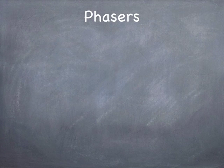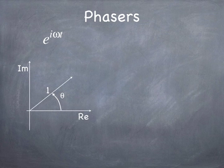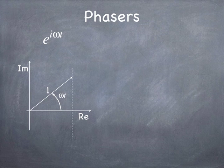What happens if you have a phasor whose phase angle theta is a function of time? Instead of theta, you've got omega t — a linearly, uniformly increasing phase angle. What you would imagine is that the phasor is now going to spin in the real and imaginary plane — in the complex plane — it's going to spin around.